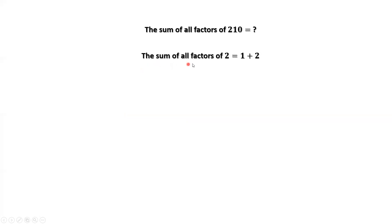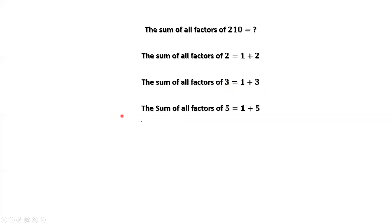The sum of all factors of 2 equals 1 plus 2. The sum of all factors of 3 equals 1 plus 3. The sum of all factors of 5 equals 1 plus 5. The sum of all factors of 7 equals 1 plus 7.